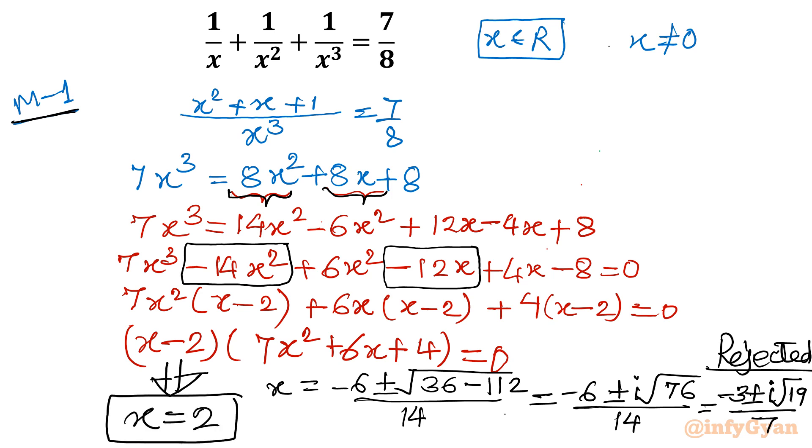Now method number 2. Remember minus 14x square and minus 12x, we will take up. Now method number 2, that equation first I will write, cubic equation. So equation was 7x cube, let me write all the terms to left, minus 8x square minus 8x minus 8 equal to 0.